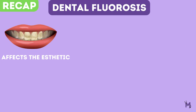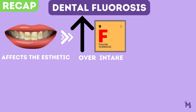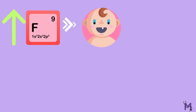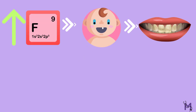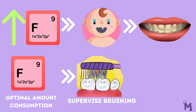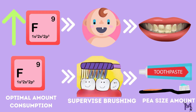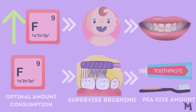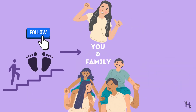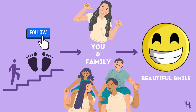In conclusion, dental fluorosis is a condition that affects the appearance of teeth due to over intake of fluoride during tooth development. While fluoride is essential for dental health, excessive consumption during early childhood can lead to dental fluorosis. To prevent dental fluorosis, fluoride should not be consumed more than the optimal amount, supervised tooth brushing and only a pea-sized amount of fluoride toothpaste should be used. By following these simple steps, you can help ensure that you and your family have healthy, beautiful smiles for years to come.